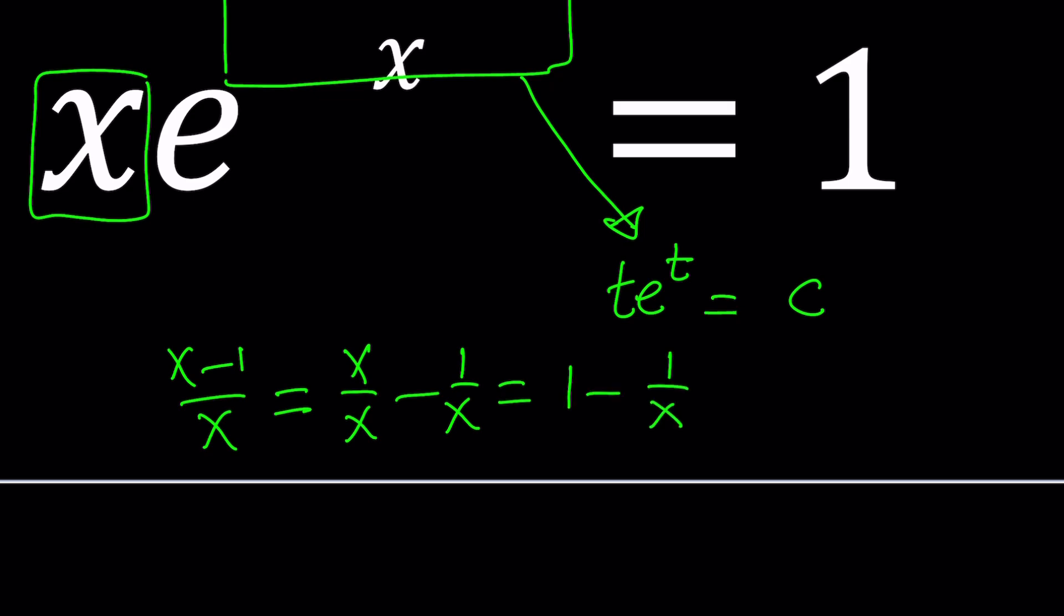This can be written as x over x minus 1 over x, which you probably know is equal to 1 minus 1 over x. If you were given something like this, what would you do? Make a common denominator. And get that, right?